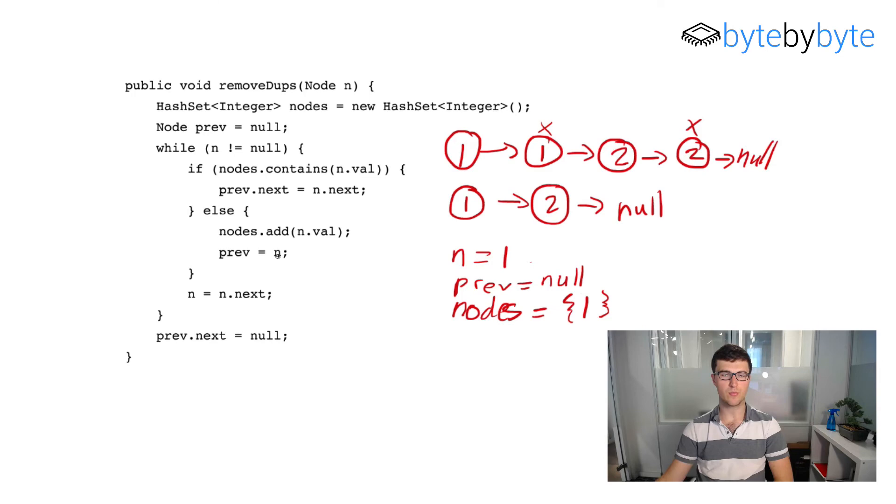Now we say prev equals n. So prev is going to be equal to this one node as well. And in this case specifically it's the first one node. And then we're going to come down here and we're going to say n equals n.next. So now n equals one again but it's the second one. So I'll just do like one star.